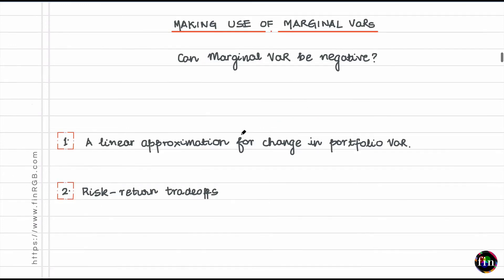Let's finish by looking at how to make use of marginal VAR. First, can marginal VAR be negative? By all means, yes. Marginal VAR can be negative. It can happen that when you increase the allocation to a given asset, even a risky one, it leads to the overall portfolio VAR going down. If that happens, your marginal VAR will be negative.